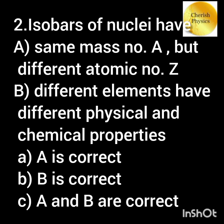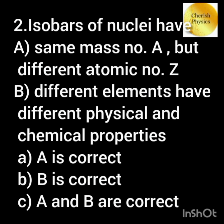Isobars of nuclei have: option A — same mass number but different atomic number; option B — different elements have different physical and chemical properties.